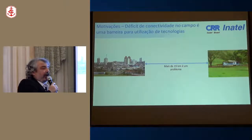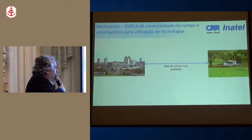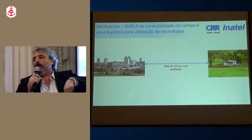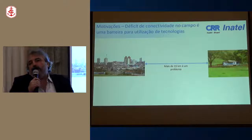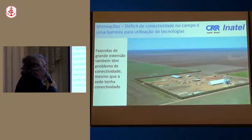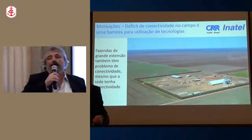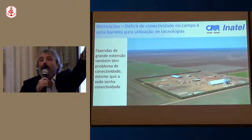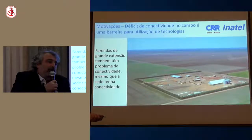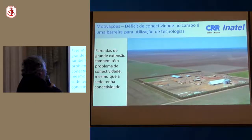No agronegócio, há um problema com as tecnologias 3G e 4G: não se consegue prover conectividade se a sede da fazenda está a mais de 15 km da sede do município. Mesmo em fazendas onde se leva a rede até a sede, extensões maiores que 10 ou 15 km impedem que a conectividade chegue ao campo. Assim, o trator de última geração equipado com tecnologia não pode ser usado em sua plenitude porque não se consegue transmitir a informação do trator para a sede da fazenda.